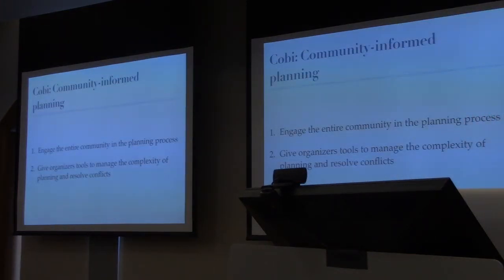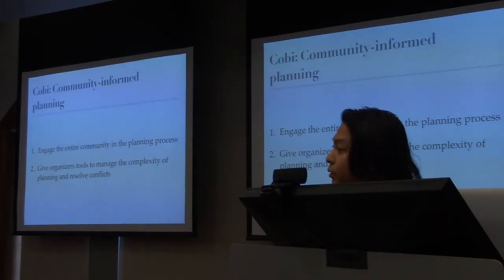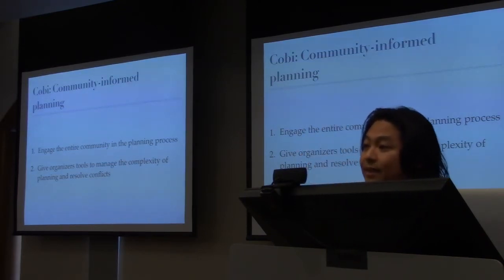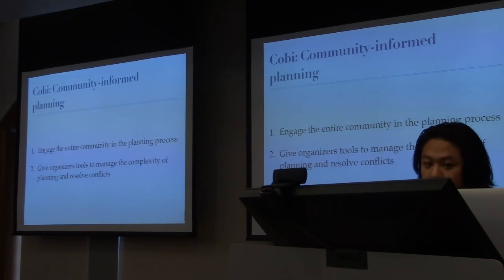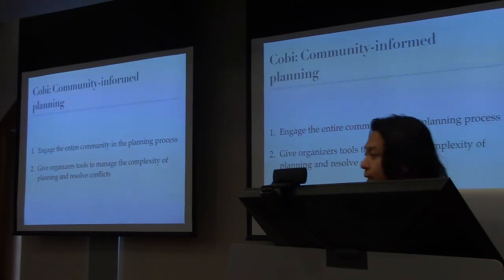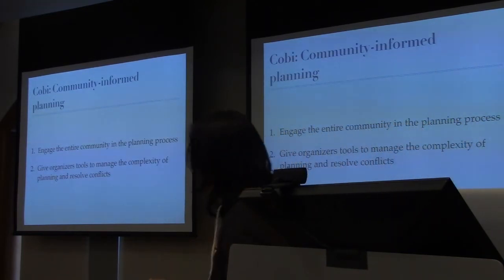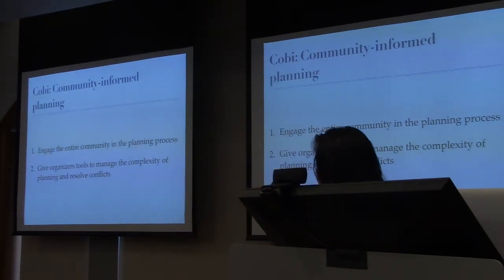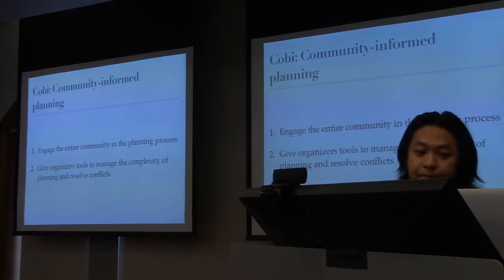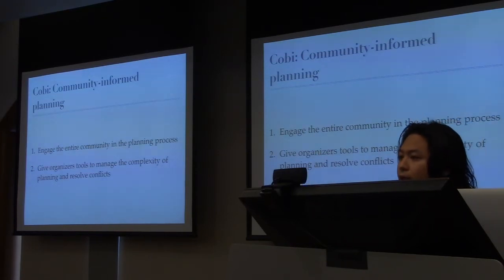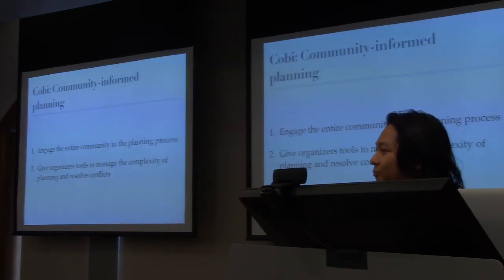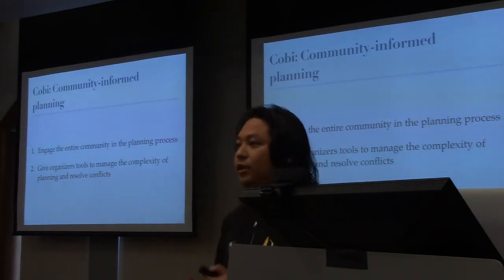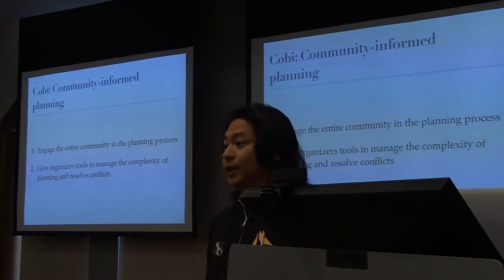To overcome these challenges, we created COBE — a computational ecosystem for a new process we call community-informed planning. COBE is built on two simple ideas: first, engage the entire community in the planning process; second, give organizers the tools to manage the complexity of planning and to resolve conflicts. The question really is how — and thinking about this as a computational ecosystem is going to give us some interesting ideas.